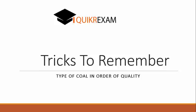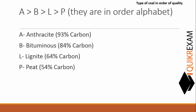So let's see a trick. If we see alphabetical order starting from A to P, then A - Anthracite has 93% carbon. That means it is the best coal available.